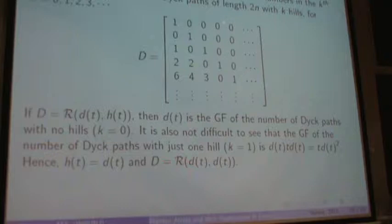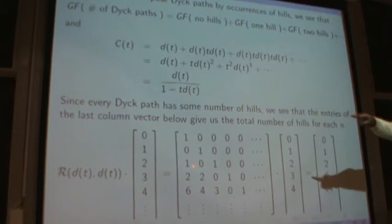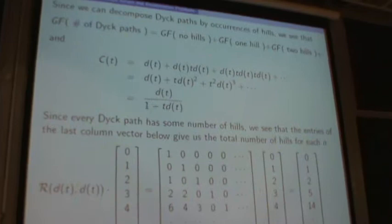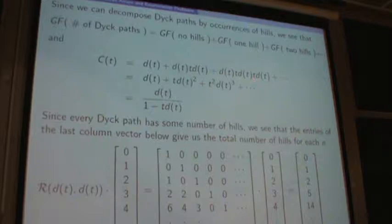It's also not difficult to apply that decomposition for zero peaks, one peak, two peaks and so on. We know that the Dyck paths are counted by the Catalan numbers, and setting that equal, we see that D of T over one minus two D of T equals the Catalan number generating function.